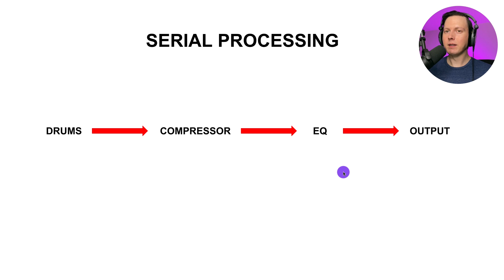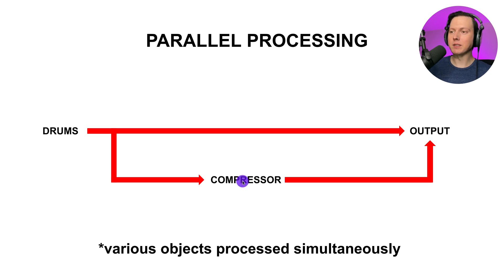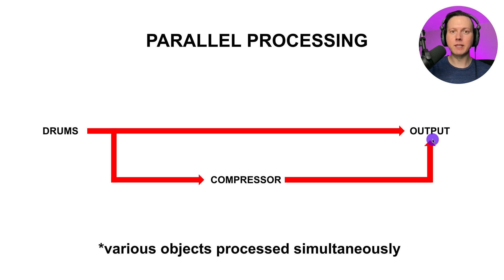If we take a look at this diagram again: drums into the compressor, into the EQ, into the output — that is just another example. So what is parallel processing? Parallel processing means that various objects can be processed simultaneously — think about two parallel lines. Here I have the drums going to the output, but I'm also taking part of the signal from the drums, sending it to a compressor, and then feeding that to the output. I'm combining the original drum signal with the compressed signal and blending those together.